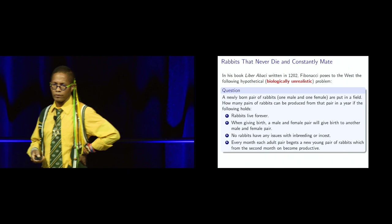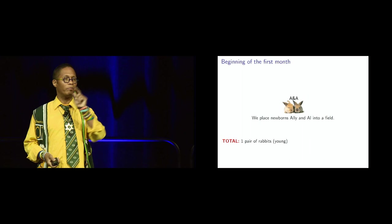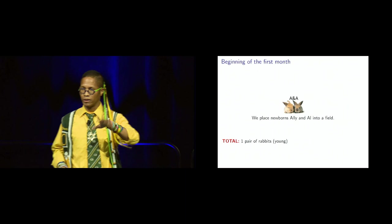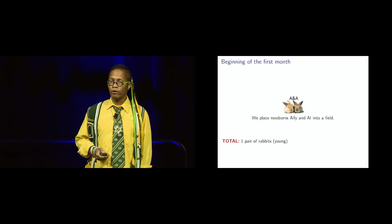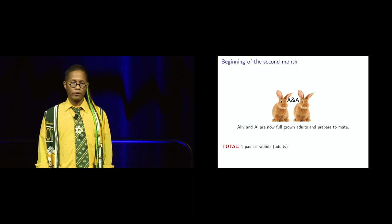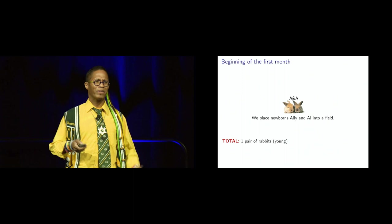People don't mention that when they talk about this, but I just have to put that down there in case someone's like, no, but just, just, no, it's the rabbit's way. Every month, each adult pair begets a new young pair of rabbits, which from the second month onwards becomes productive. Okay, so I got some visuals to make this really, really clear. So we start with two rabbits on the first month. We're going to get Fibonacci number one. How many rabbits do we have? One. That is called Fibonacci number one. Incidentally, Fibonacci number zero is zero. So we have Allie and Al. Aren't they cute? They're put into a field.